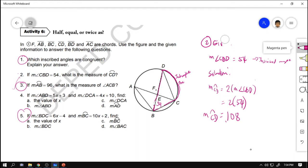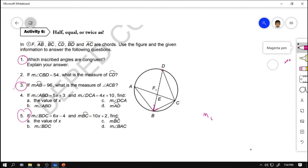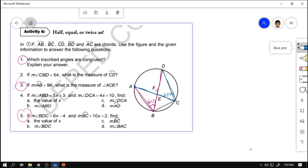For number 4 naman, the measurement of angle ABD is equal to 5X plus 3, and the measurement of angle DCA is equal to 4X plus 10. Find the value of X, the measurement of angle ABD, the measurement of DCA, and the measurement of arc AD. So, tignan muna natin yung given. Angle ABD, yun siya, yun, naka-pink. Ang sukat daw nito ay 5X plus 3. Next, we also have angle DCA. Si angle DCA daw naman ay 4X plus 10. Okay? Now, next. Yun yung given natin.